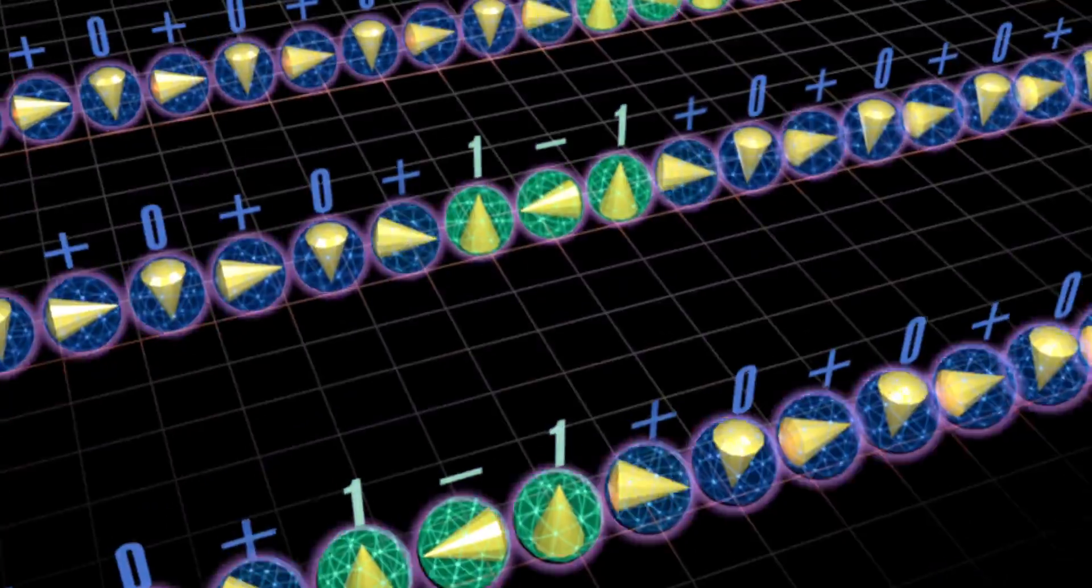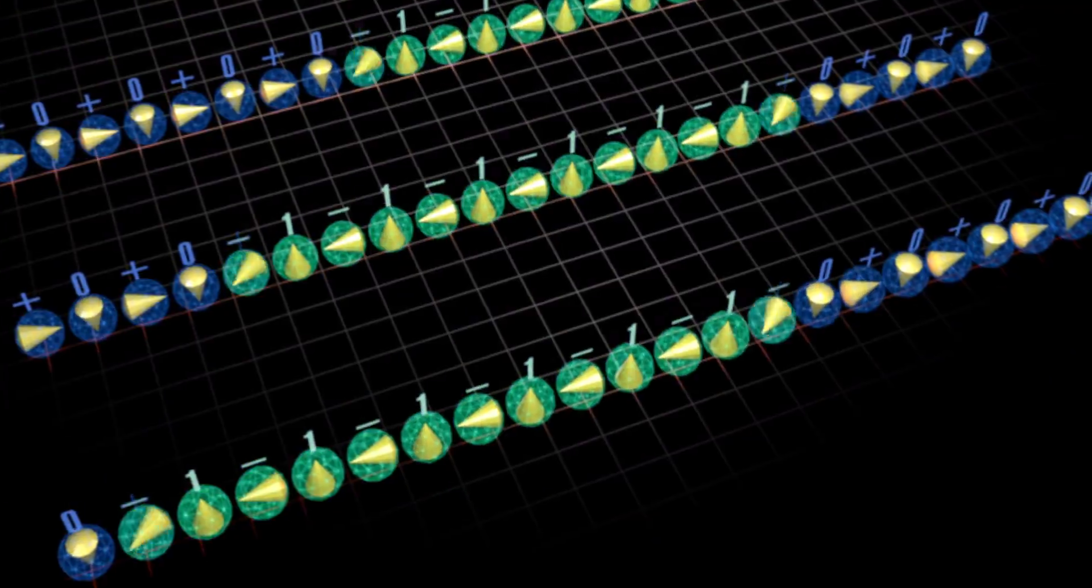And if you wanted to factor a 5,000-bit number on a quantum computer, that would only take you about two and a half hours if it was running at the same speed. So, it's really a very dramatic thing.